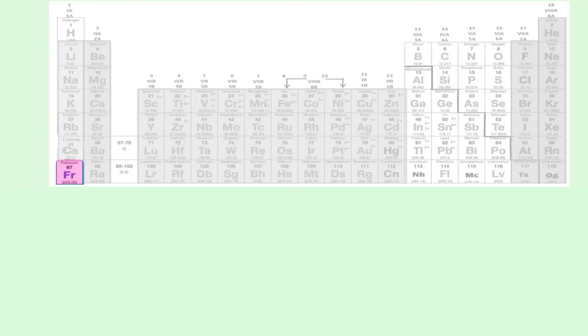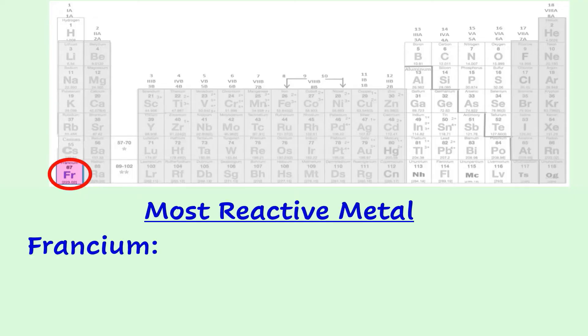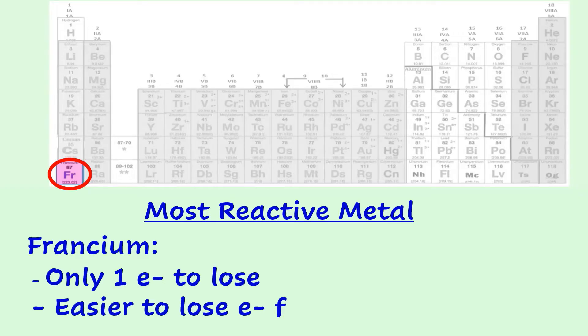The most reactive of all the metals is francium. Like all alkali metals, it only needs to lose one electron, so it's able to complete that or react very quickly. Francium's one valence electron is in the seventh energy level, making it far from the nucleus and easier to lose than the valence electrons of other alkali metals.